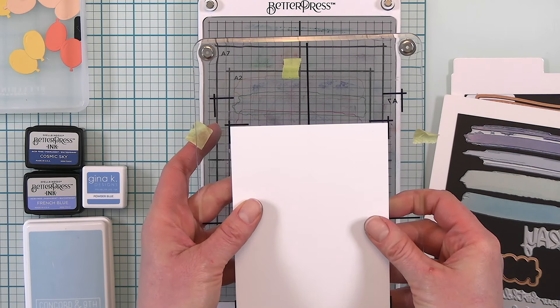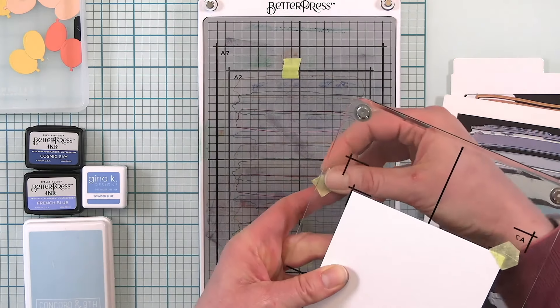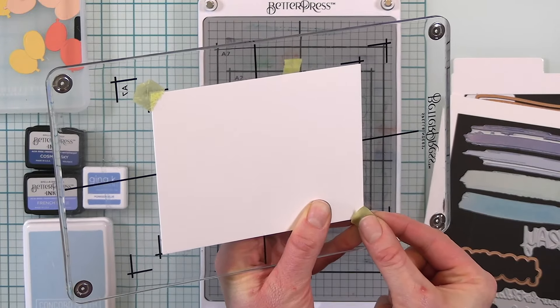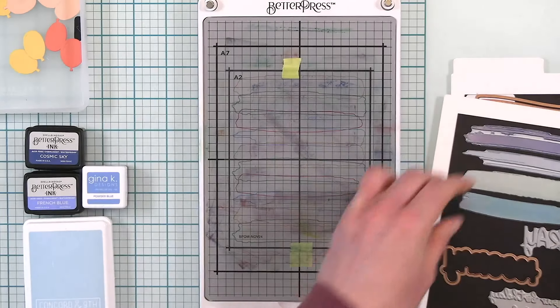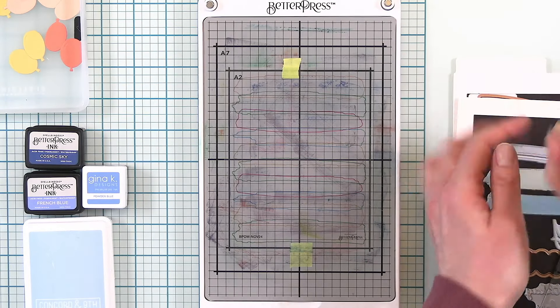This is a cotton card panel that is specially designed for the Better Press. I'm holding that down with some Best Ever Craft tape just in the corners so that is ready to go.